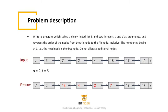First, let's take a look at the problem definition. We have a linked list L, and two integers S and F. You are going to write a program to reverse the order of the nodes from the S node to the F node. The numbering begins at 1. In other words, the head node is the first node.